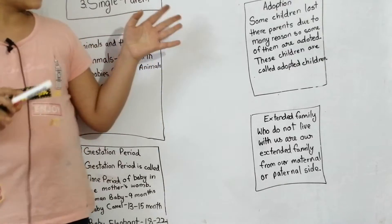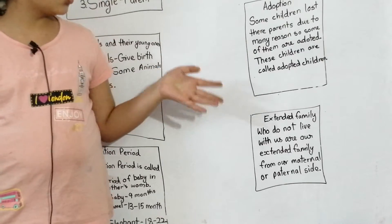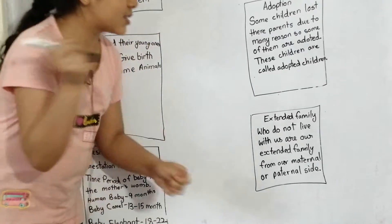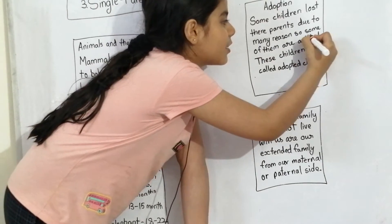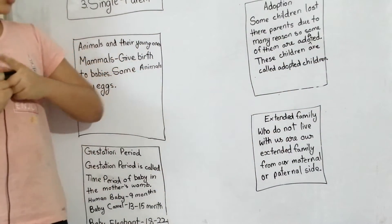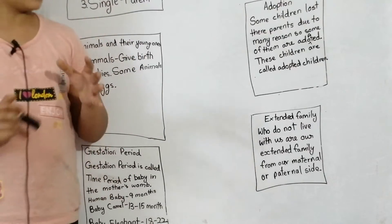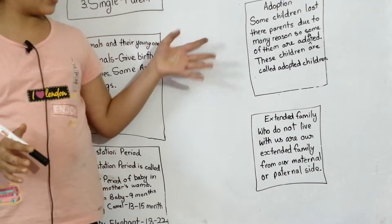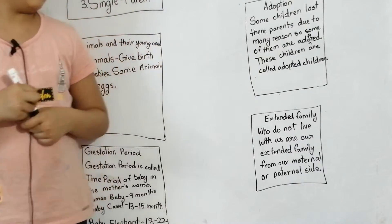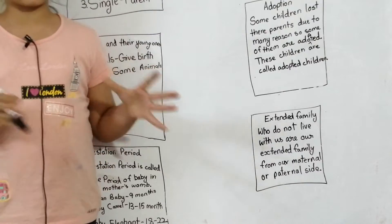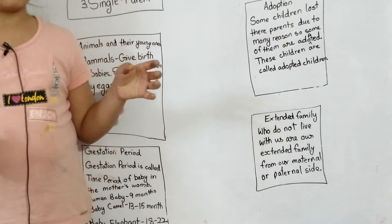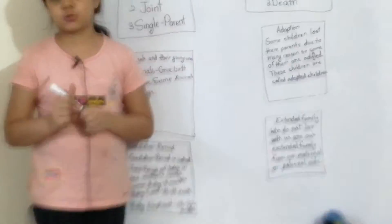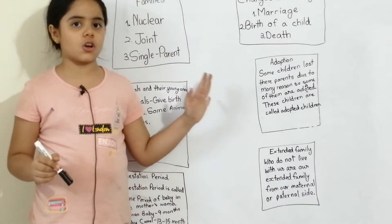In adoption, some children lose their parents due to many reasons. Some of them are adopted — these children are called adopted children. Children who lose their parents have a special home called an orphanage. The legal process of taking in such children is called adoption.